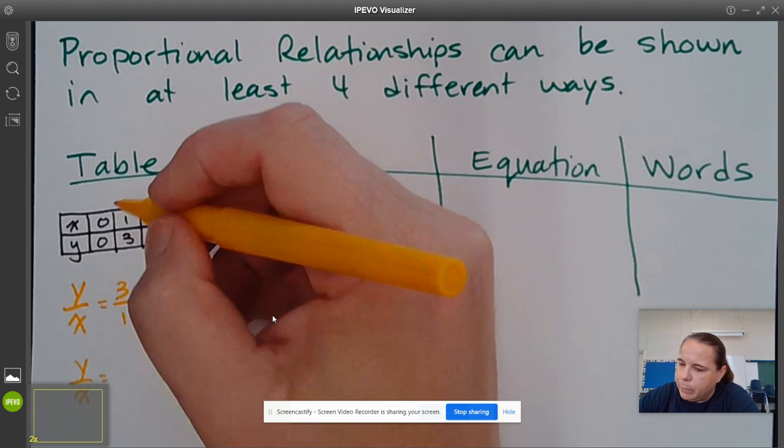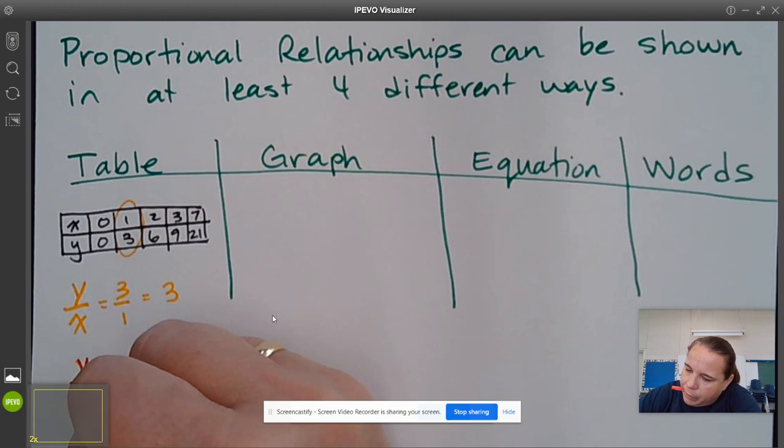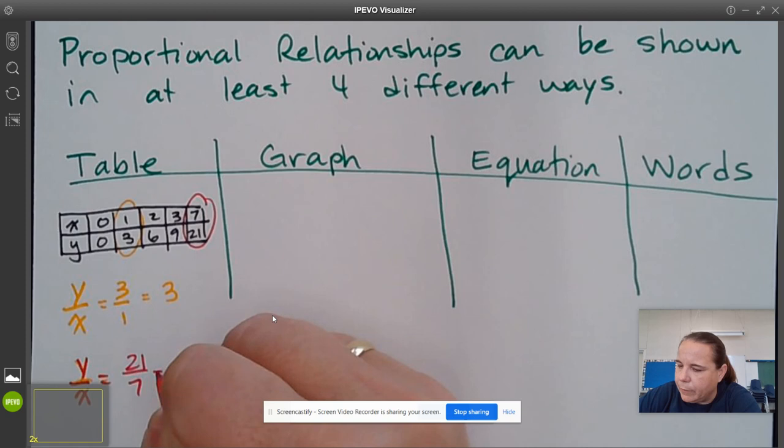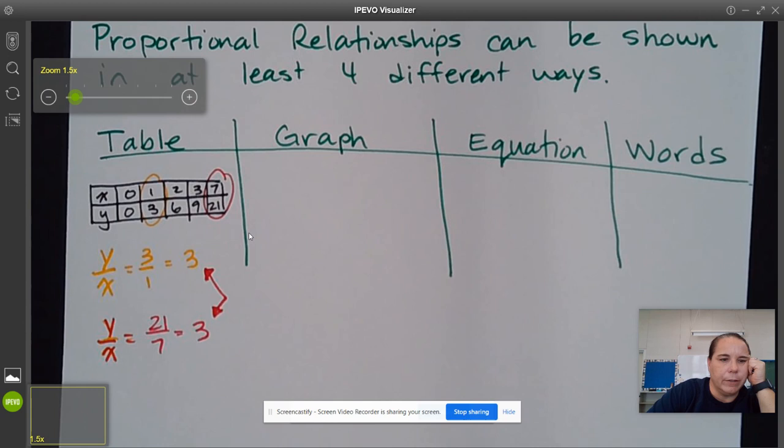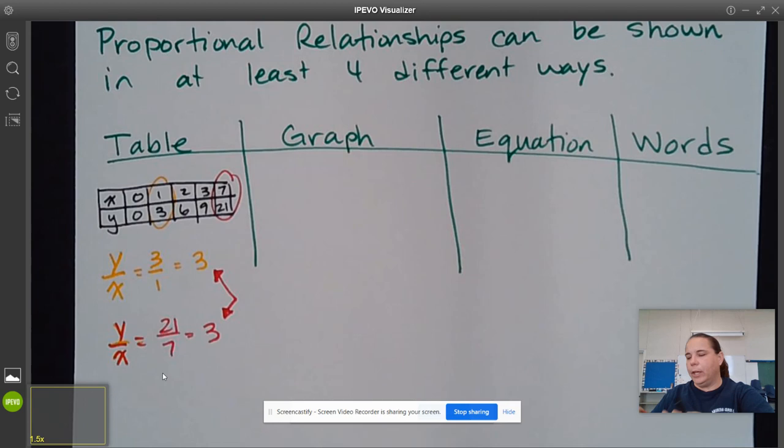3 over 1 equals 3, Y over X. So if we, that would be in this one. Y over X. If we look here, it's 21 over 7, and that also equals 3. So we have this constant of proportionality in which these two numbers are, that these ratios of X and Y are the same.